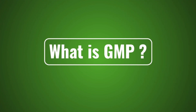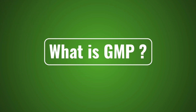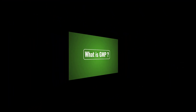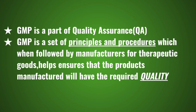What is GMP? GMP is a part of the quality assurance (QA). GMP is a set of principles and procedures which, when followed by manufacturers for therapeutic goods, help ensure that the products manufactured will have the required quality.